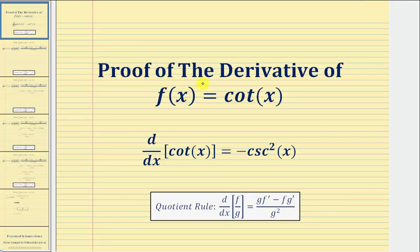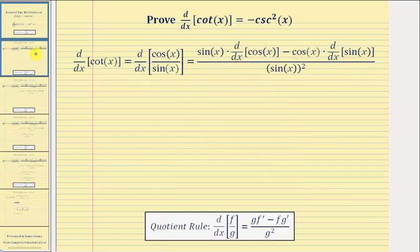Welcome to a proof that the derivative of cotangent x with respect to x equals negative cosecant squared x. We'll first rewrite cotangent x using the quotient identity: cotangent x equals cosine x divided by sine x.